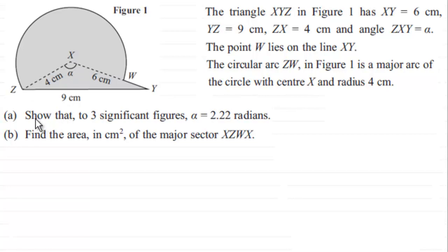So in the first part, part A, we've got to show to three significant figures that alpha equals 2.22 radians. And then go on to find the area in centimetre squares of the major sector XZWX. So if you had a go at this, let's just show you how I'd go about working it out anyway and you can check your solution.